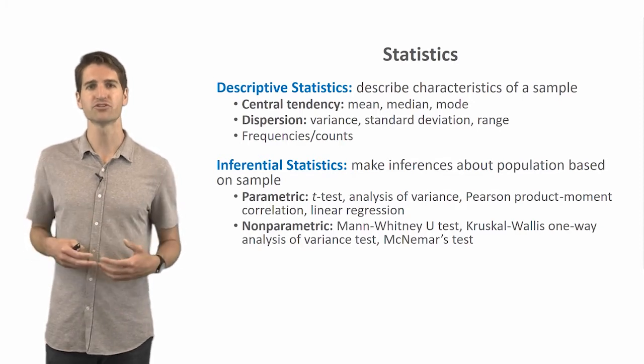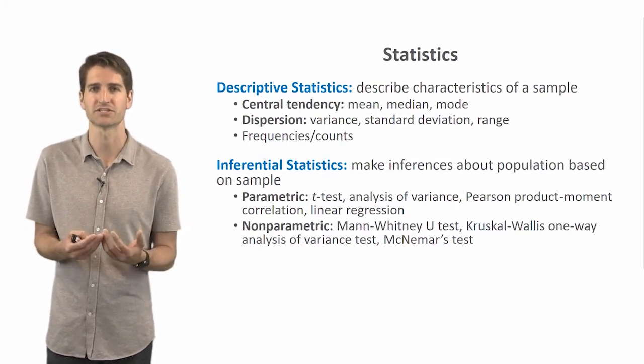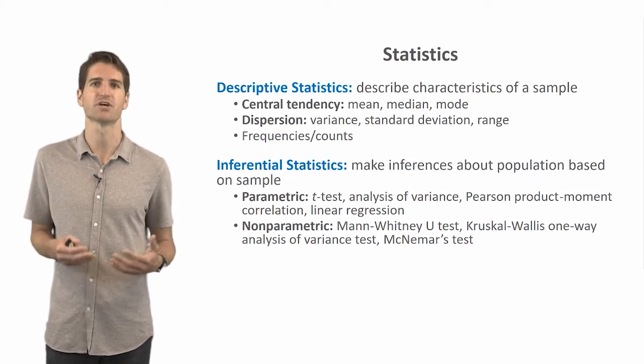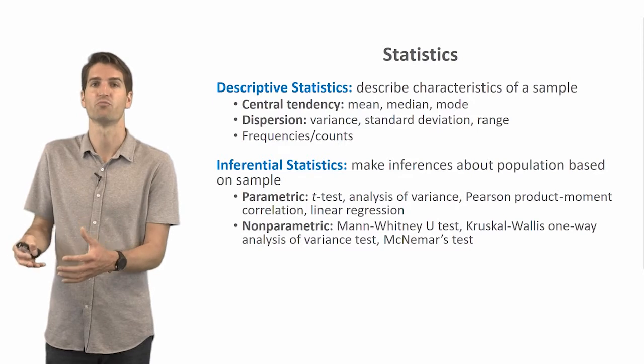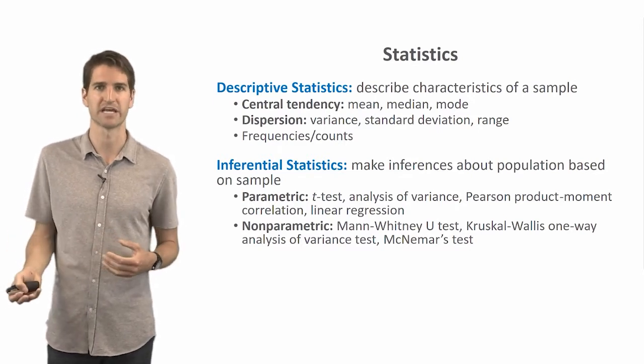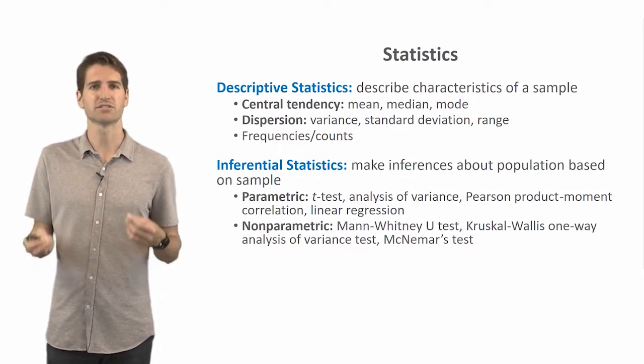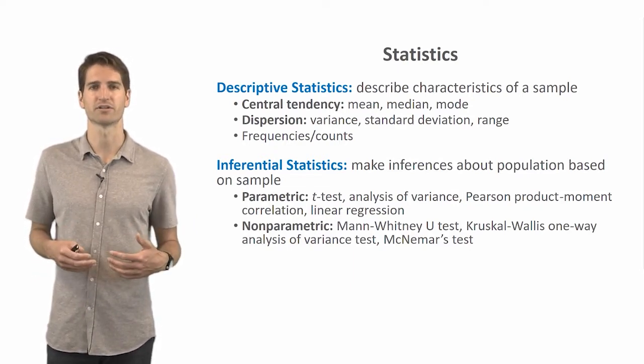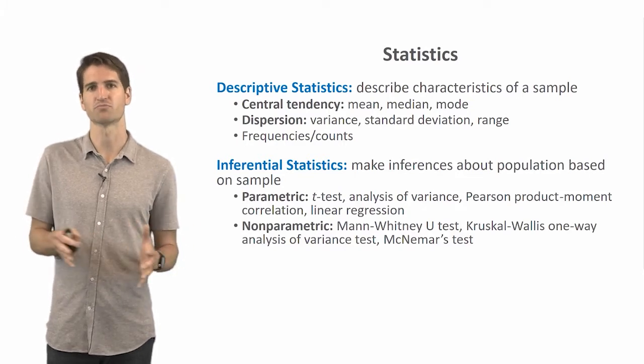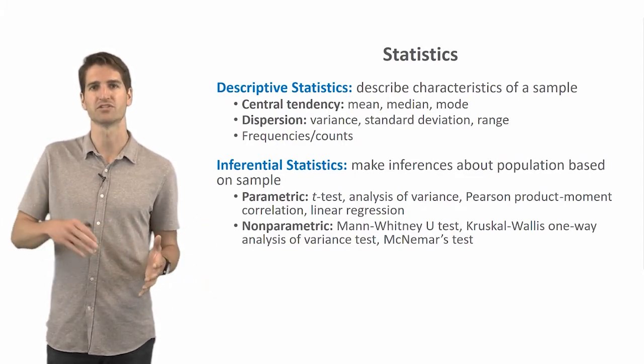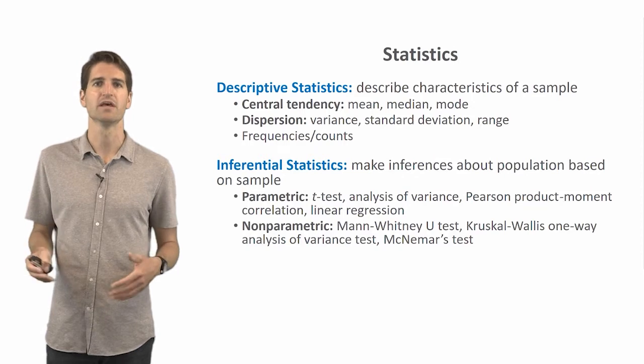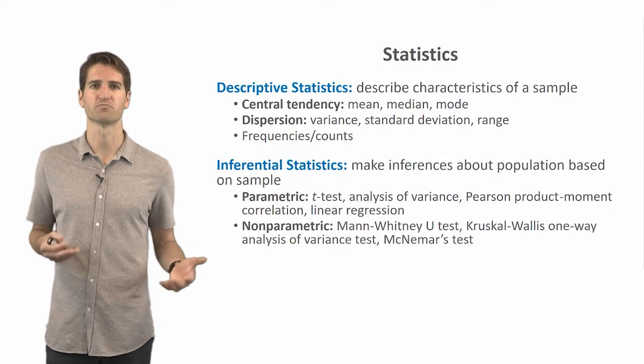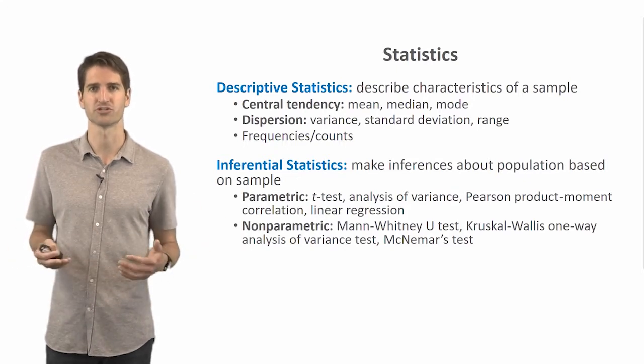Now, moving on to inferential statistics, as the name implies, inferential statistics implies we're inferring something. And specifically, we're making inferences about a population based on the sample from which we've gathered data or acquired data. And so in general, we can distinguish between two different types of inferential statistics, parametric and nonparametric statistics. Parametric implies assumptions of normality, and that there is some kind of distributional assumption here. And these common tests include t-tests, analysis of variance, Pearson product moment correlation, and linear regression, just to name a few.